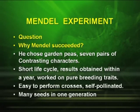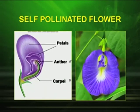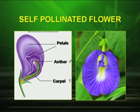Another very important thing is that many seeds are produced in one generation. You can see in the figure that the pea flower is a self-pollinated flower, as the male part and the female part — the stamen and the carpel — are enclosed within the flower. So there is no chance of cross-pollination.